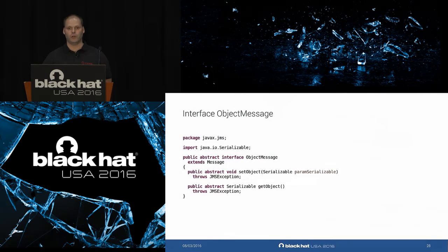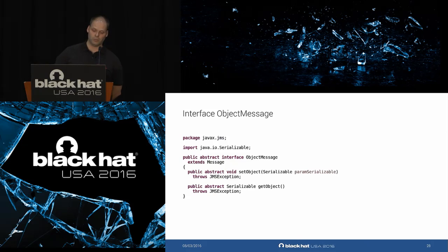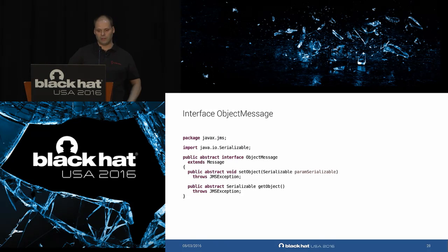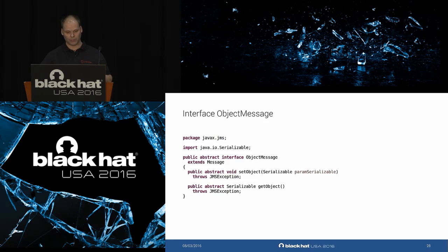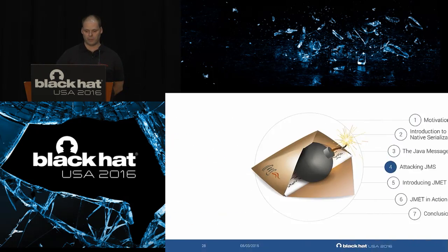The ObjectMessage interface is very simple — it only has two methods: `setObject`, which stores a Serializable object in the message, and `getObject`, which returns it as a Serializable. This interface must be implemented by every JMS broker/vendor, so they all have their own implementation classes for ObjectMessages. And you can already guess what `getObject` is doing — it's deserializing data. This brings us to the interesting part: attacking JMS.